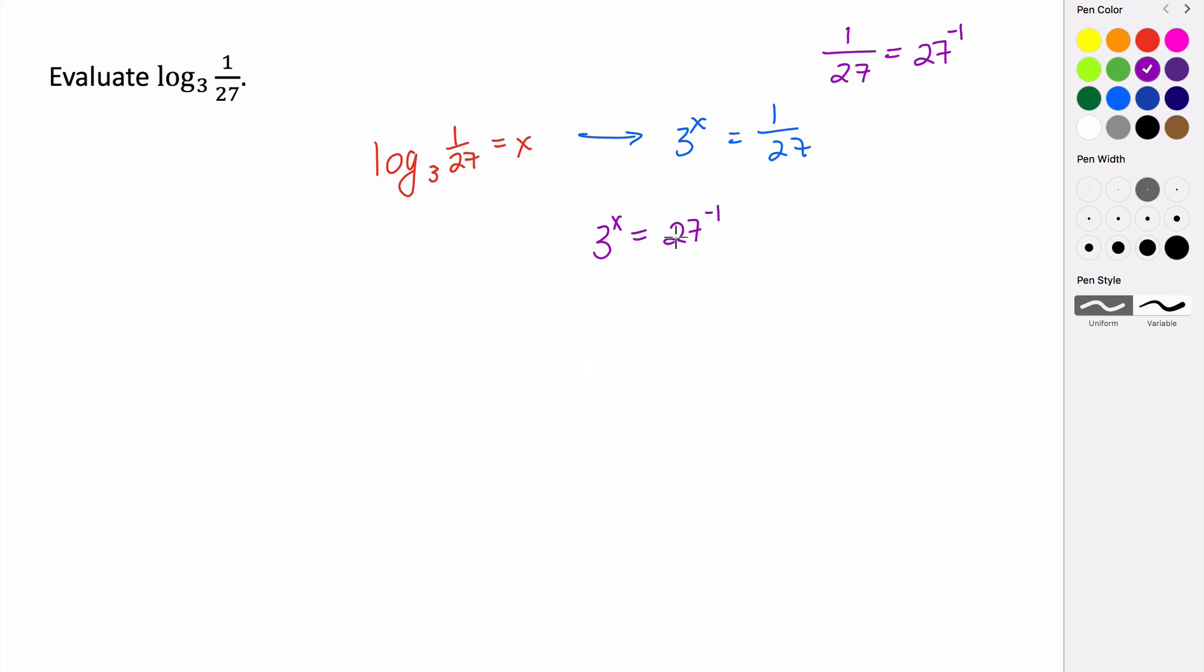And fortunately for us, 27 can be broken down to be expressed as 3 to some power. So this is 3 to the x equals 27 is 3 to the third. So 3 to the third, all of this to the negative first power. And then again, when you raise a power to a power, you multiply the exponents. So we get that 3 to the x is equal to 3 to the negative third power.